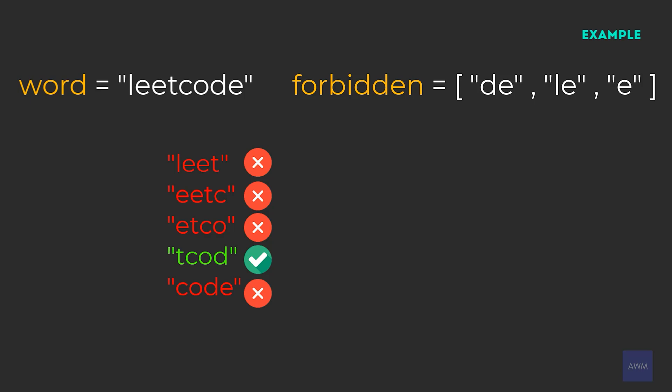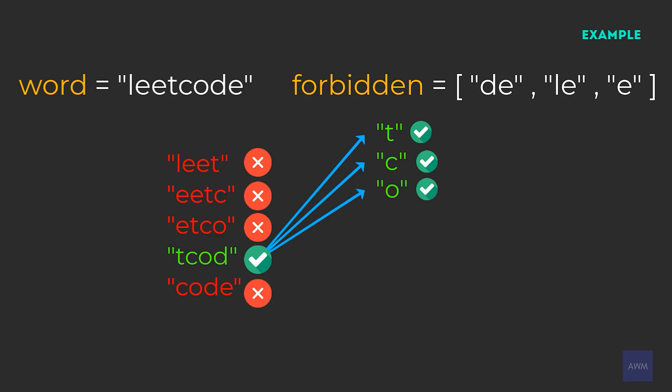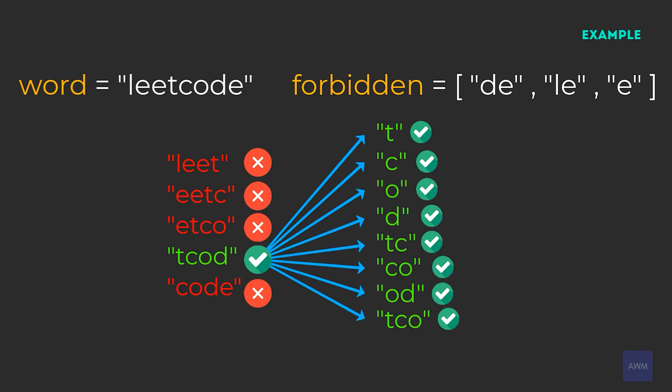Breaking down TCOD's substrings, we have T, C, O, D, TC, CO, OD, TCO, COD, and TCOD. All of those substrings do not exist in forbidden, which makes TCOD valid. And it happens to be the longest substring that is valid for this input.